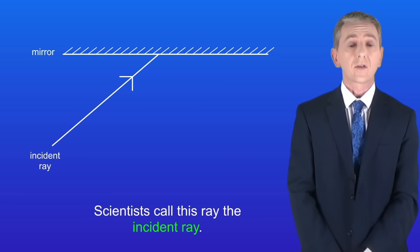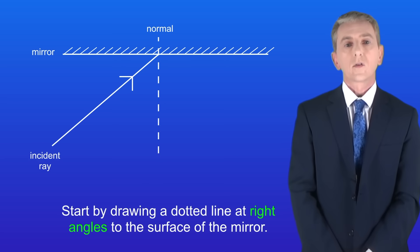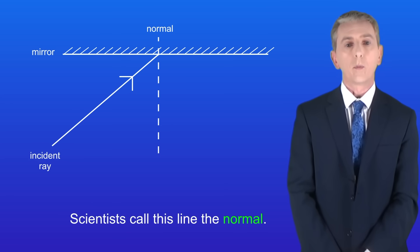Scientists call this ray the incident ray. We need to work out how this ray will be reflected. So we start by drawing a dotted line at right angles to the surface of the mirror like this. Scientists call this line the normal.